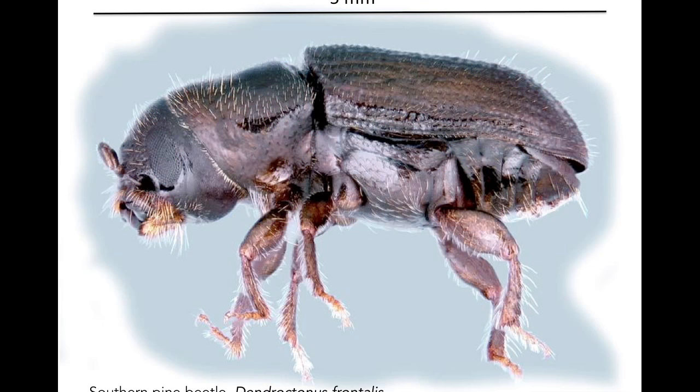Here's an example of a beetle — the southern pine beetle. This is a forest pest that can get into your pine trees and kill them. Its scientific name is Dendroctonus frontalis. Even though this picture is very large, this is not a very large insect — it's less than half a centimeter in size.